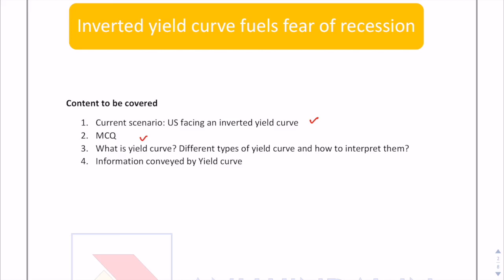Through an MCQ we will try to solve and analyze the problem. The third topic is what is a yield curve, its different types, and how to interpret them — how many types of yield curves are there and how we should interpret them. And the last topic is the information conveyed by the yield curve: why it is so important and how it conveys information related to the economic scenario.